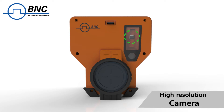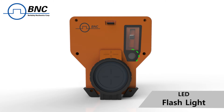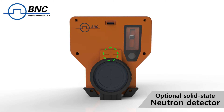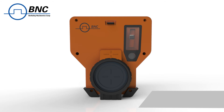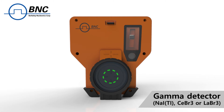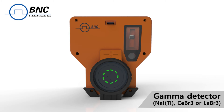A high-resolution camera and LED flashlight are included. An optional compact solid-state neutron detector provides not only a small form factor, but also a high gamma rejection ratio. The SAM 950 can accommodate up to a 3 by 3 inch sodium iodide detector. Optional high-resolution detectors, such as cerium bromide and lanthanum bromide, are available in sizes up to 2 inch by 2 inch.